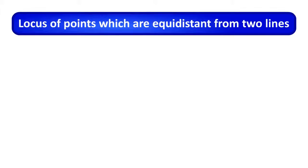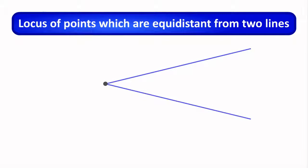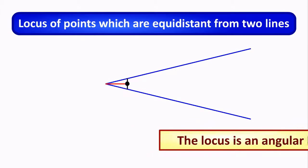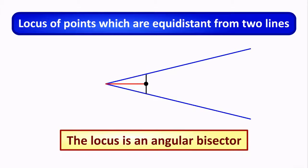The locus of points which are equidistant from two lines is an angle bisector.